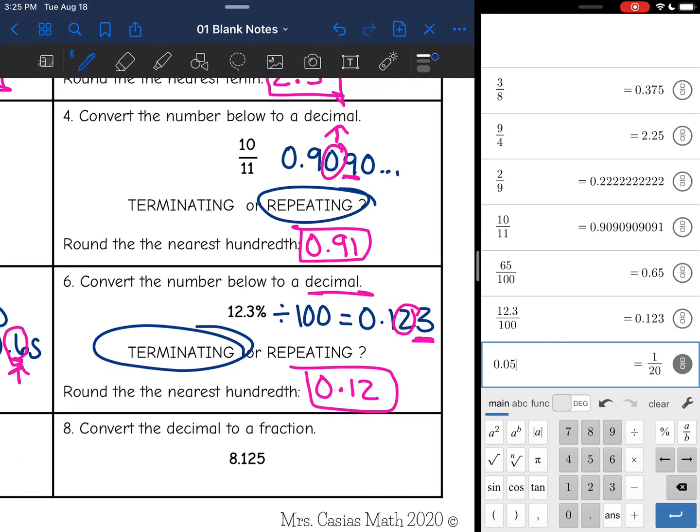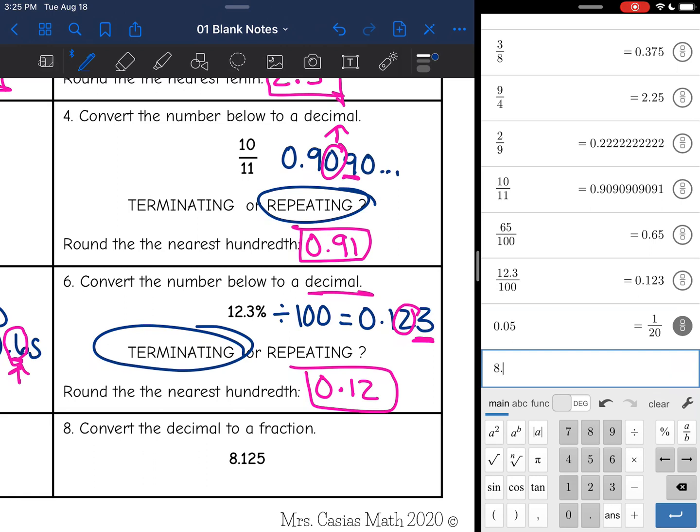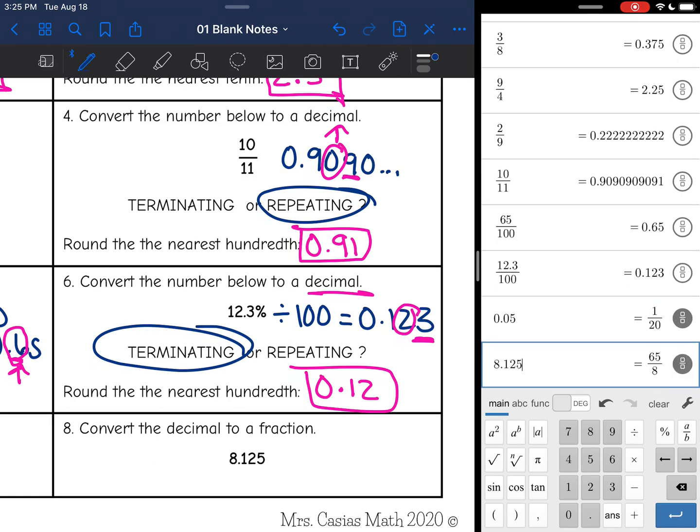Okay, now I have another decimal to convert to a fraction. 8.125, hit the little fraction symbol, and it is equivalent to 65 over 8.